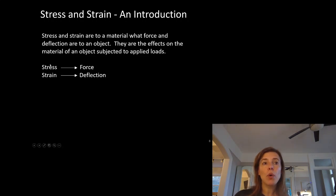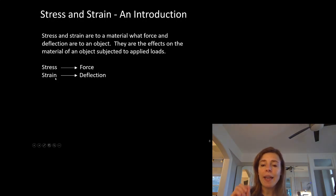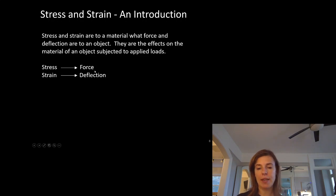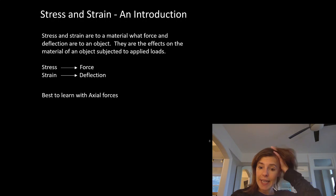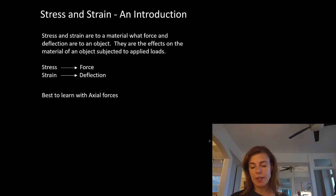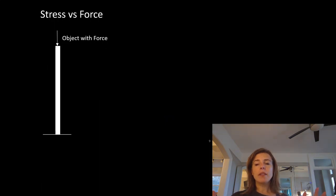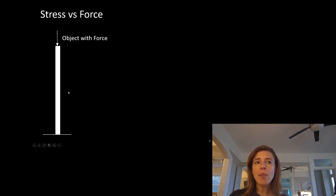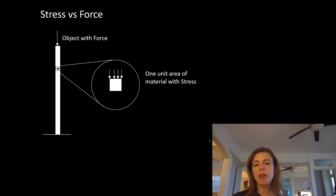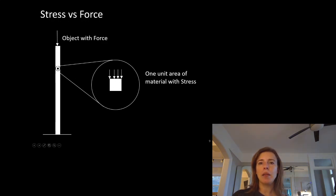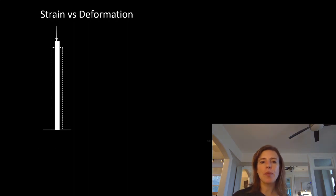We will be able to convert back and forth. If we have some unknown-size object, we'll talk about it in stress and strain. When we find out what actual object we're talking about, we'll convert to force and deflection. It's easiest to learn these things with axial forces. Stress and force are very similar. When we have a force on an object and we talk about stress, we're talking about a little block of that element — one unit area of material.